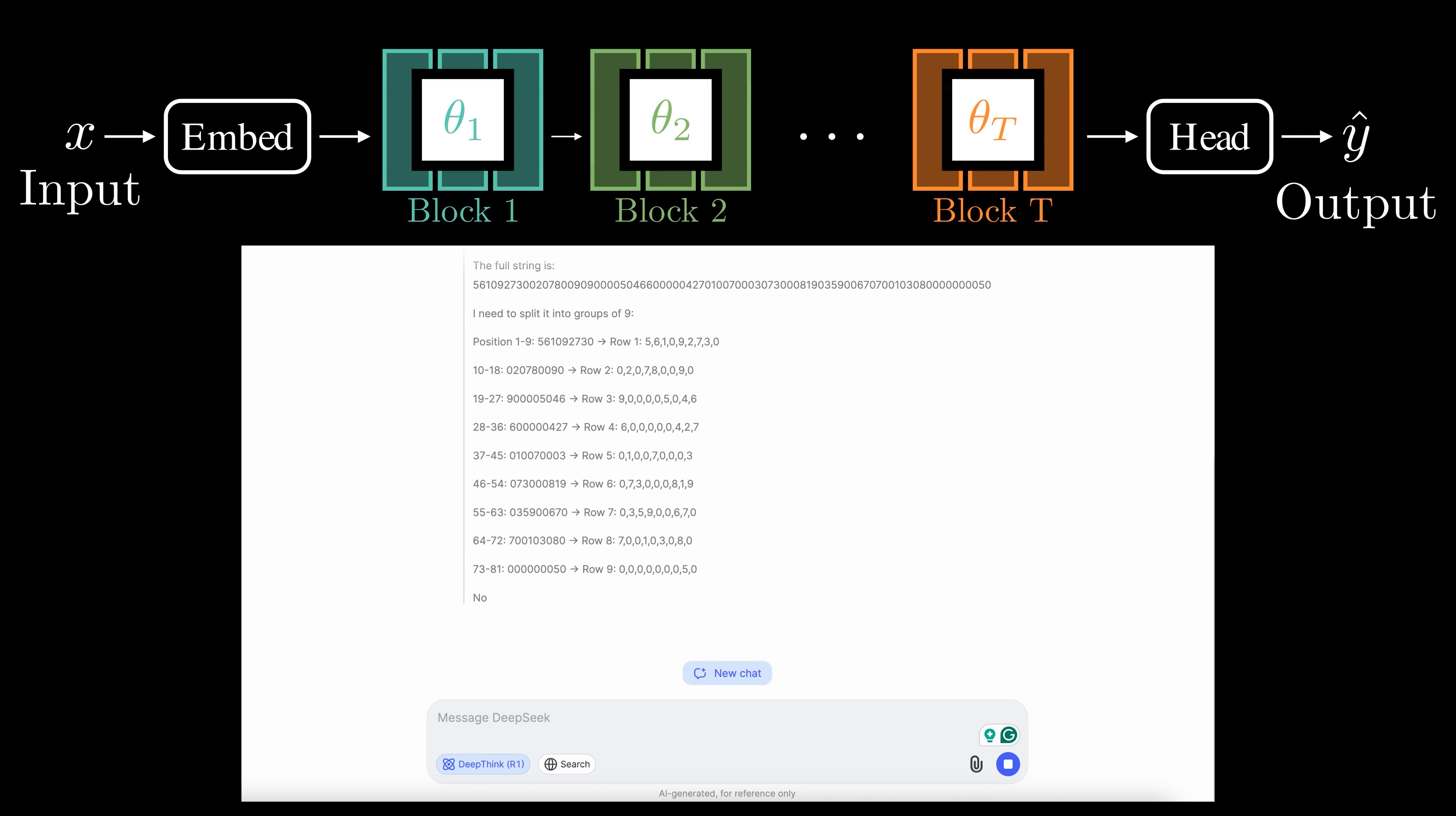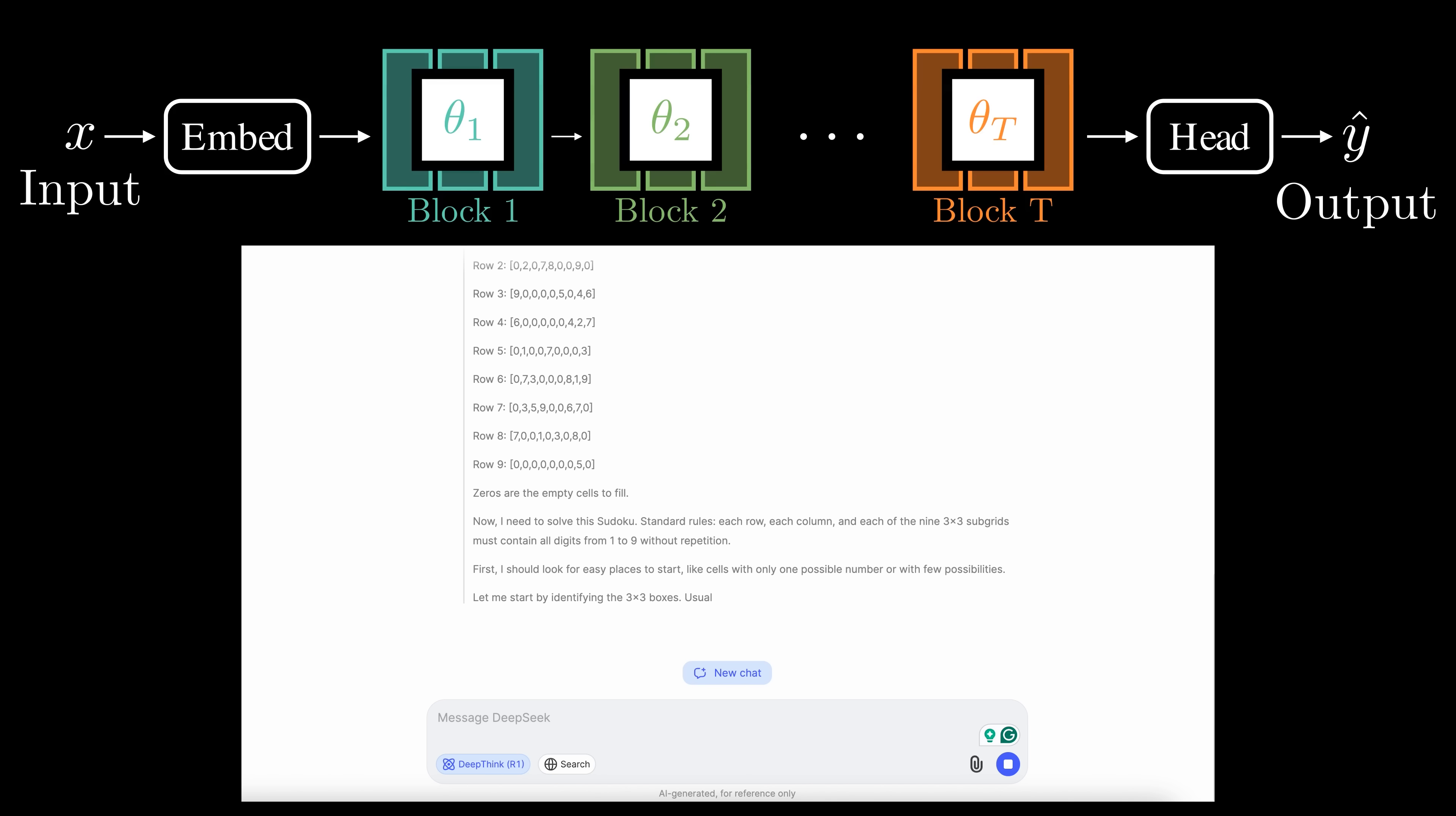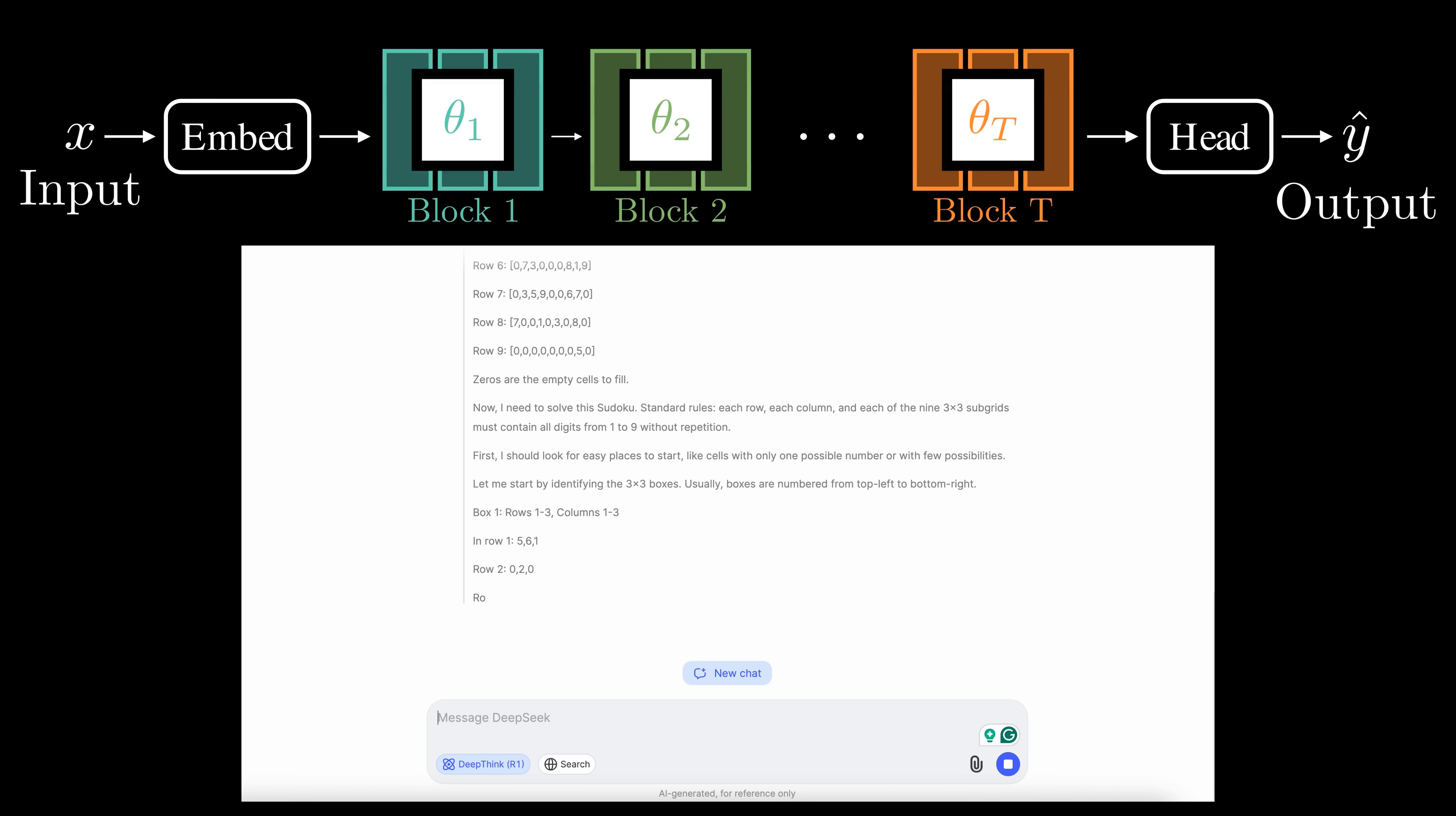However, chain of thought reasoning has some notable drawbacks. Errors made early in the reasoning process can propagate and affect later steps. Additionally, training models to generate detailed reasoning traces is computationally intensive and requires large amounts of data.